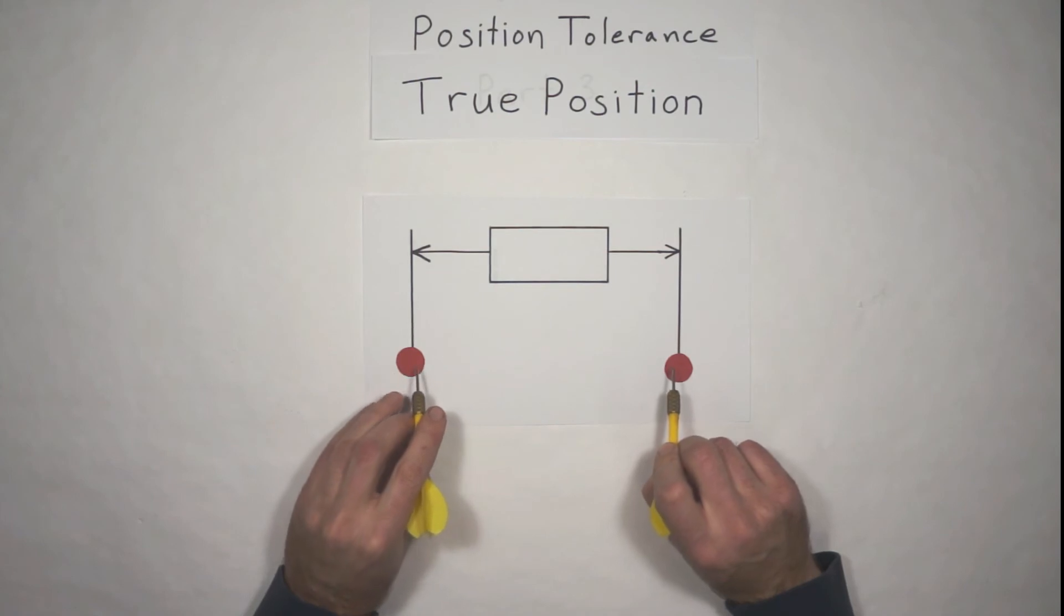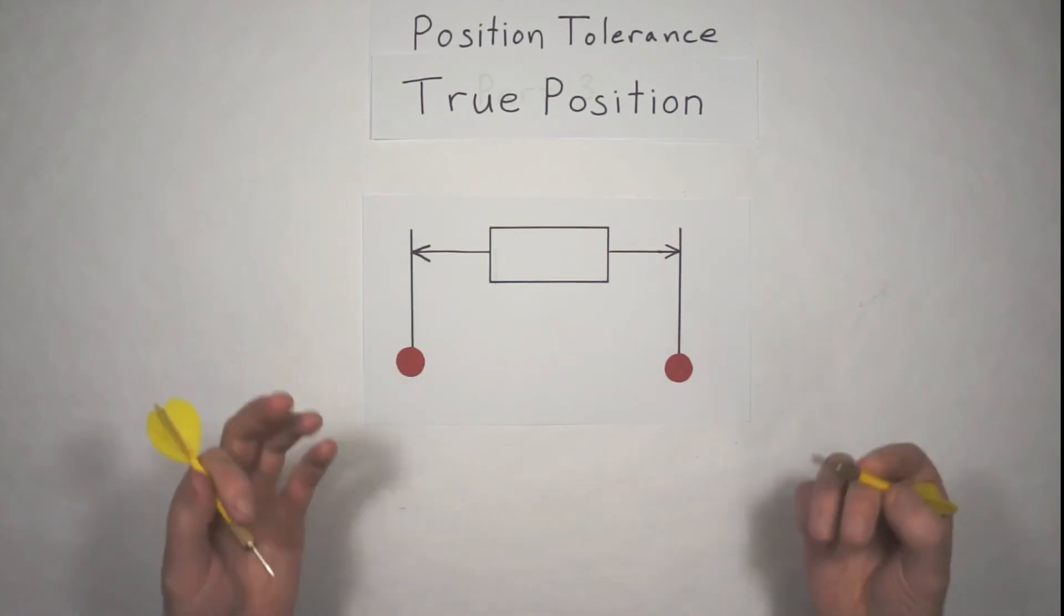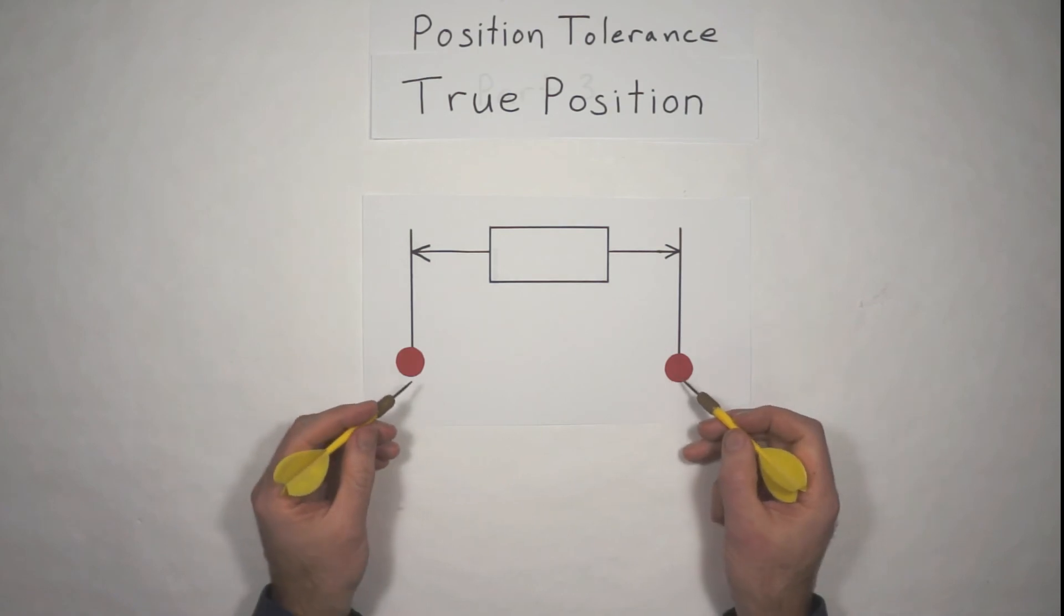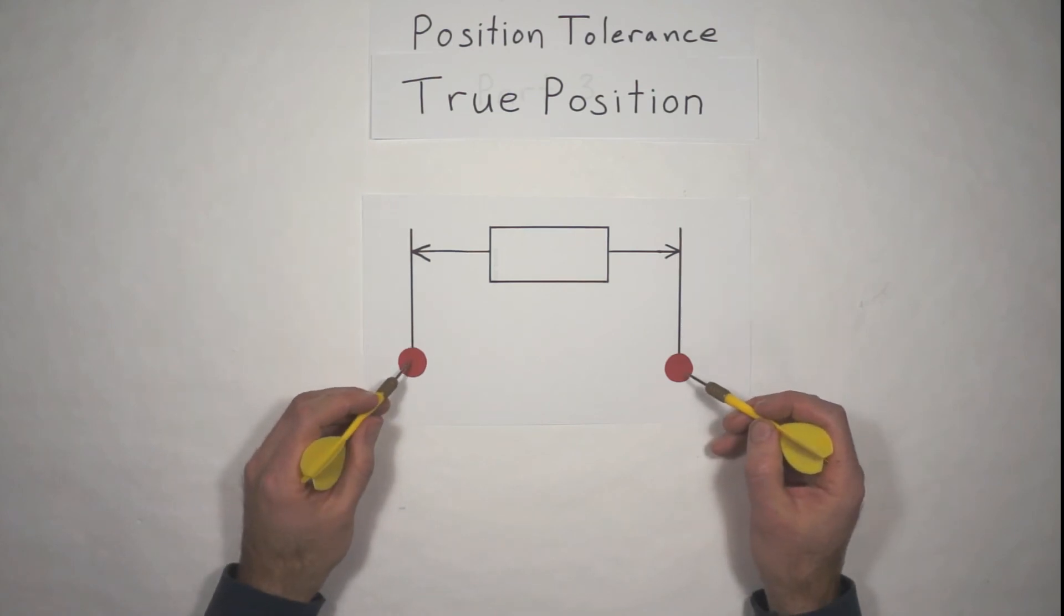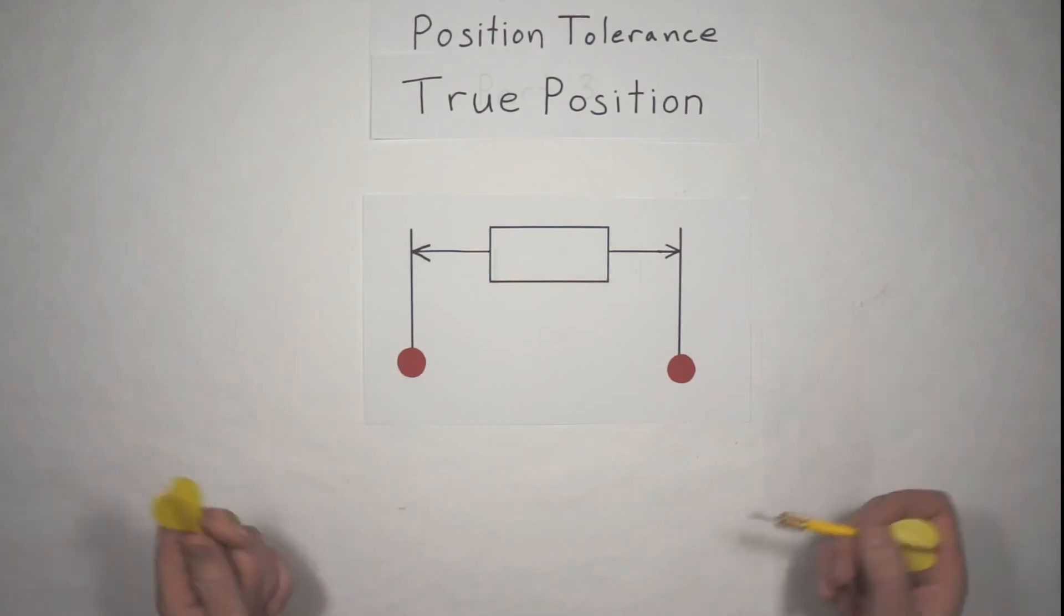And if you say, well wait a minute, I can't handle that kind of error. Well, then you need to go back and change your position tolerance to shrink the size of that bullseye. Because that's what this is about. True position identifies the center of the bullseye, the center of your target, that then the center of your feature needs to fall within.